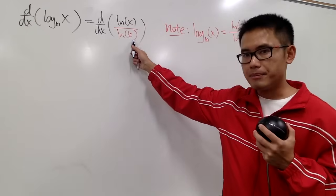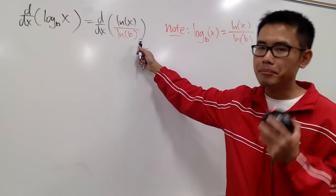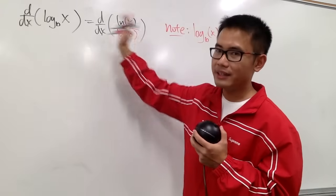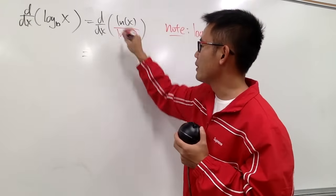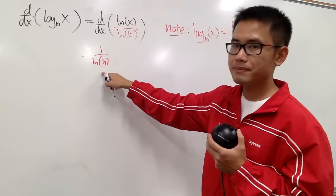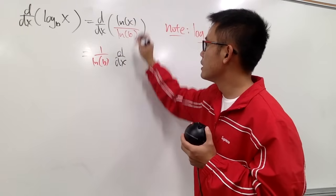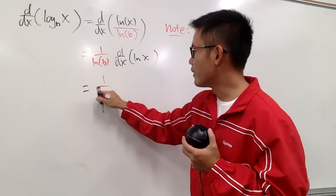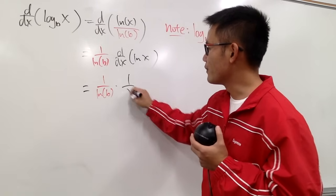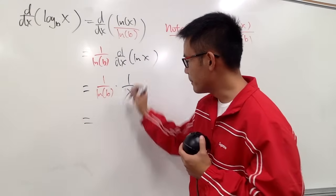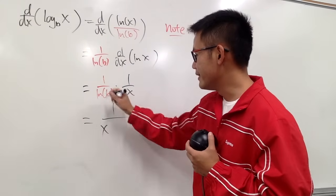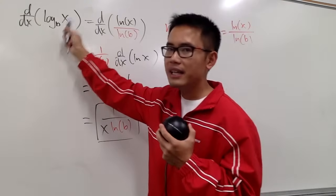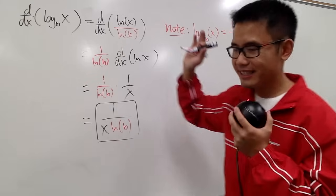Since b is a number, ln(b) is also a constant — as long as b is a legitimate base (not 1, not negative). We pull it to the front as 1/ln(b), then differentiate ln(x), which gives 1/x. So the derivative of log_b(x) is 1/(x·ln b). And that's it.